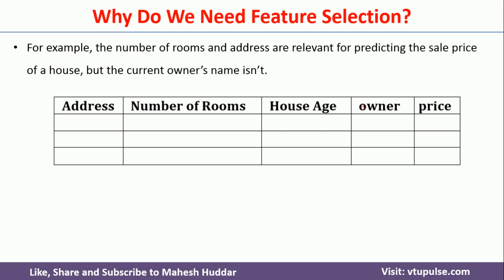Let us take an example to understand why we need feature selection. This is the dataset explained in the previous slide — it has four features and the price is what we want to predict. If you want to predict the price of a particular house, we will use each of these features. The address does matter when predicting the house price: if the house is in a remote area the price will be less, and if it is in an urban area the price will be more.